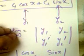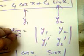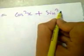Solving the matrix by cross-multiplying: cos x · cos x minus (sin x · (-sin x)), which gives cos²x + sin²x. By the trigonometric identity sin²x + cos²x = 1, so w = 1.